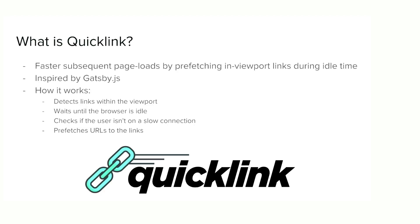So what is Quicklink? It's a library that Google released about one week ago. It does prefetching for you — it prefetches all the links that are in the viewport. It uses the Intersection Observer API to detect those visible links and then prefetches them. It's inspired by Gatsby.js, so if you're using Gatsby, you already have this built in.